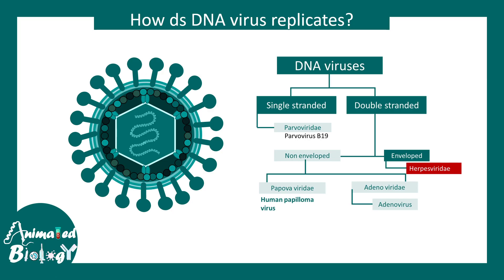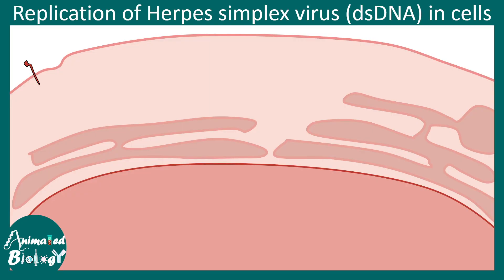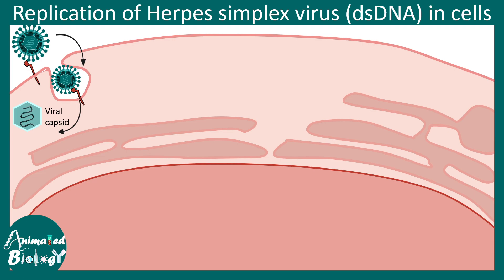Herpes simplex virus is a double-stranded DNA virus. It attaches to the cell membrane receptor, which leads to receptor-mediated endocytosis and the release of the nucleocapsid into the cytosol. The viral capsid eventually releases the genetic material — the viral DNA — and it is translocated into the nucleus.